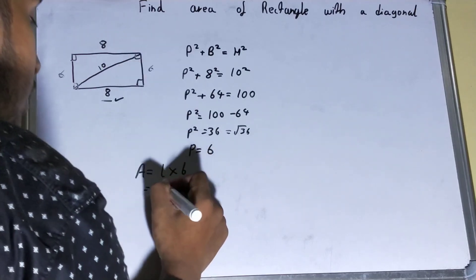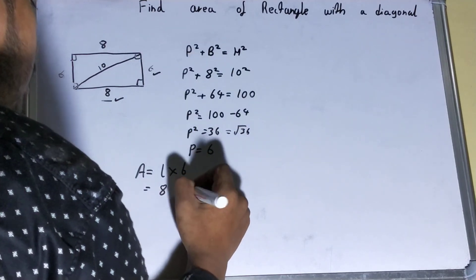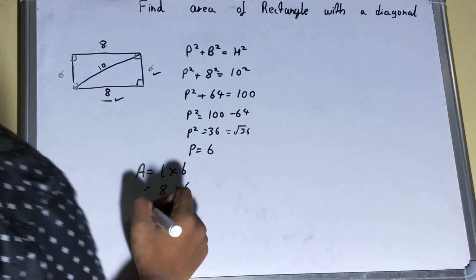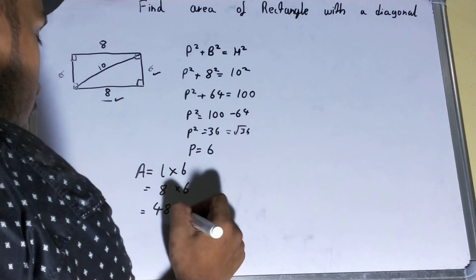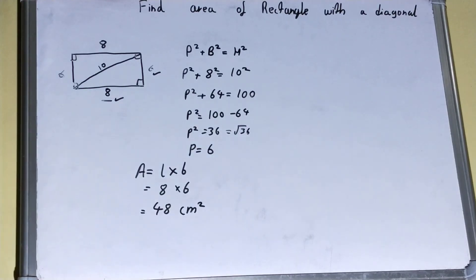So our length is 8, our breadth is 6 that we just determined. So 8 times 6 is 48. And if it is in centimeter, then centimeter squared because this is the area.